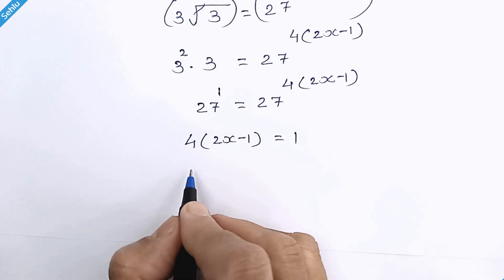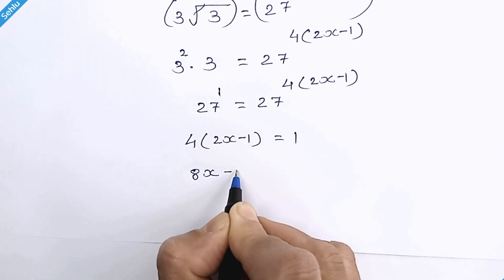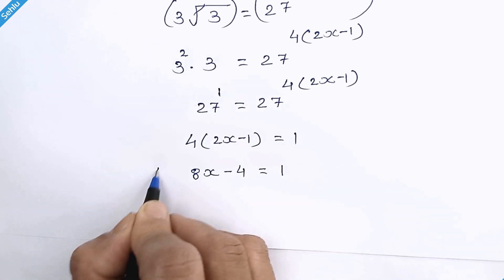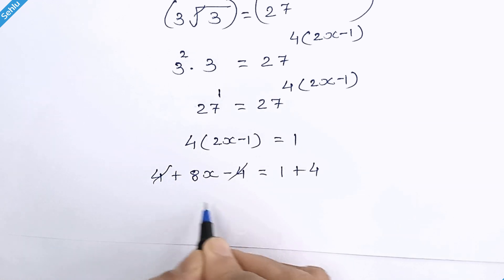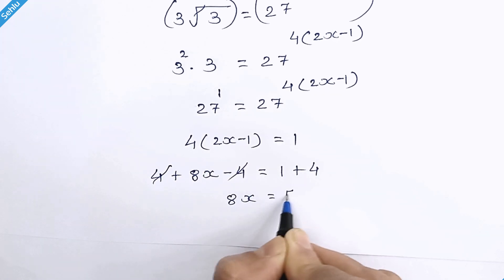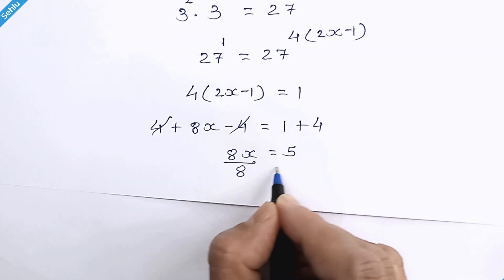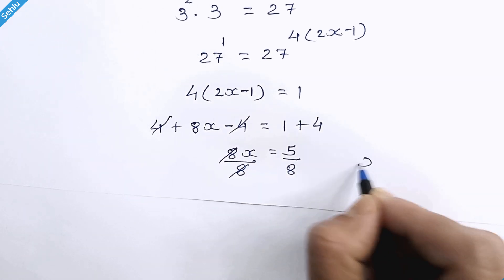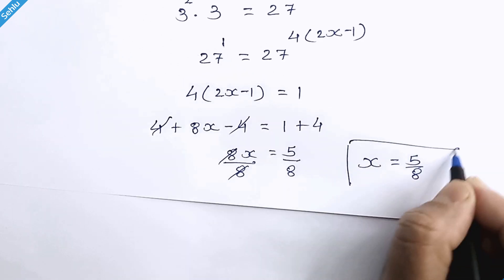So it will be 4 times (2x minus 1) is equal to 1. Let's open the bracket: 8x minus 4 is equal to 1. If we add 4 to both sides, these two get cancelled out, and we have 8x is equal to 5. If we divide both sides by 8, these two get cancelled out, so x is equal to 5 over 8. And this is our answer.